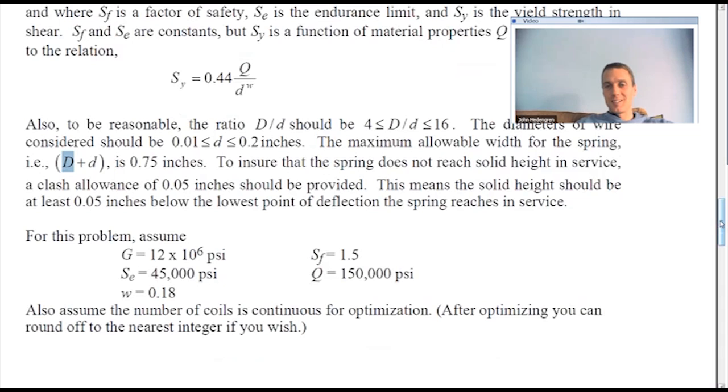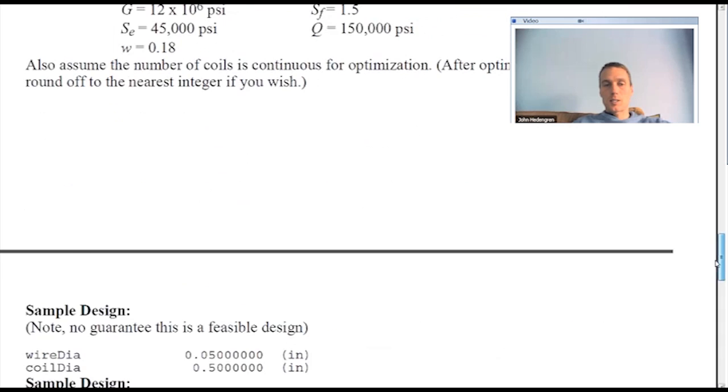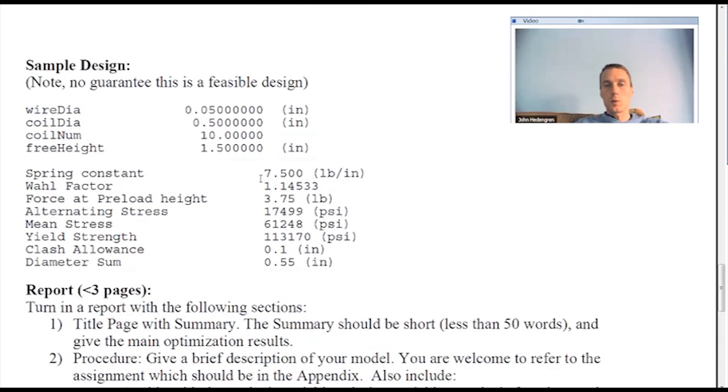I think I probably spent over an hour just getting all the equations set up. So it might take an hour or more to get the equations set up for this problem. The one thing I do provide down below is a sample design. So you can check your equations with this sample design. Go ahead and plug in your wire diameter, your coil diameter, your coil number, and then free height as well. And then you should get these values. You can check your model if you'll just plug in this design and you should receive these results if you pull that in.